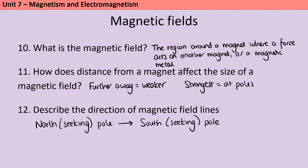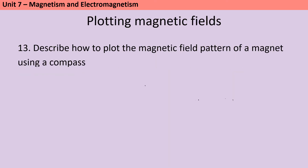Magnetic field lines always have arrows that show that they go from the north seeking pole to the south seeking pole. In order to plot the magnetic field of a bar magnet, we need a small compass called a plotting compass.